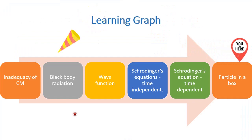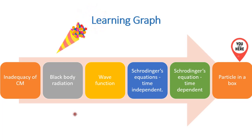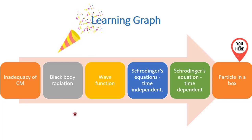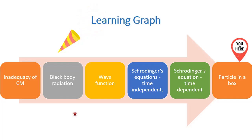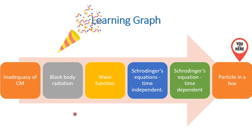So dear students, we have completed our portion. In this entire chapter we have learned about the inadequacy of classical mechanics, blackbody radiation, wave function, the Schrodinger's time-independent and time-dependent wave equations, and also particle in a box. By this, we are winding up our portion. Good learning — see you in the next class. Thank you.